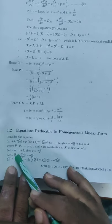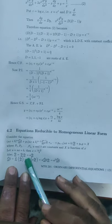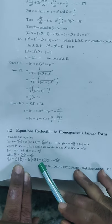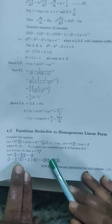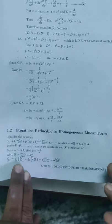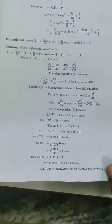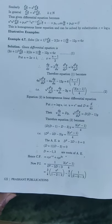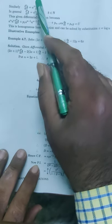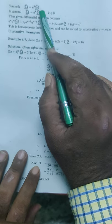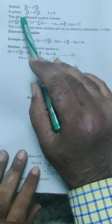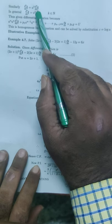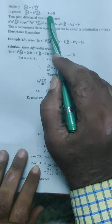d²y/dx² = d/dx(dy/dx) = a·(dy/du), which gives a²·(d²y/du²). Similarly, d³y/dx³ = a³·(d³y/du³). In general, d^k y / dx^k = a^k · (d^k y / du^k), where k belongs to ℕ.